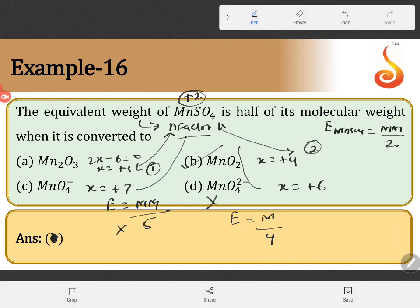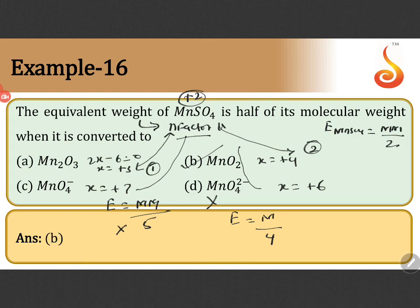So change in the oxidation state, you have to understand that is N factor. N factor you have to implement. If you implement N factor, you will get the answer easily. Therefore, amongst the given option, option B is the correct answer.